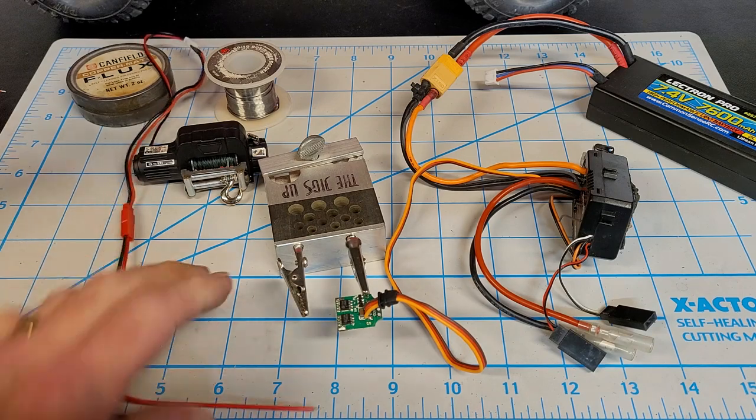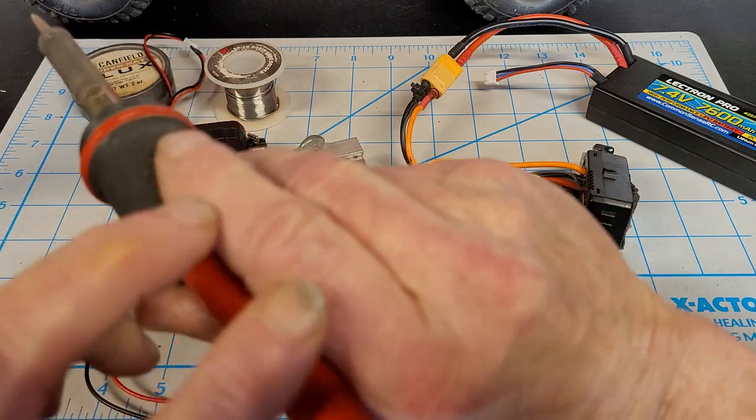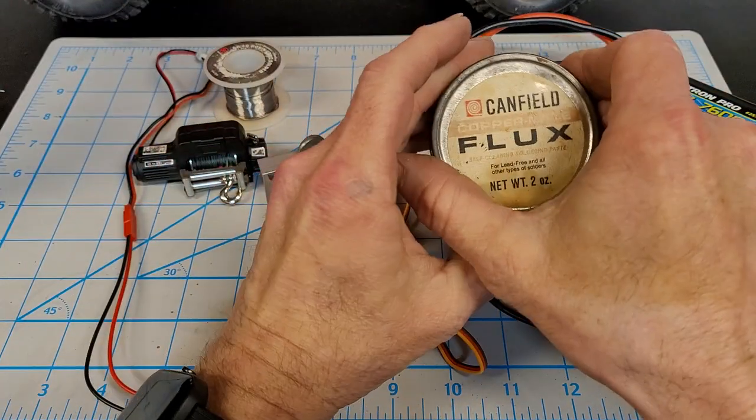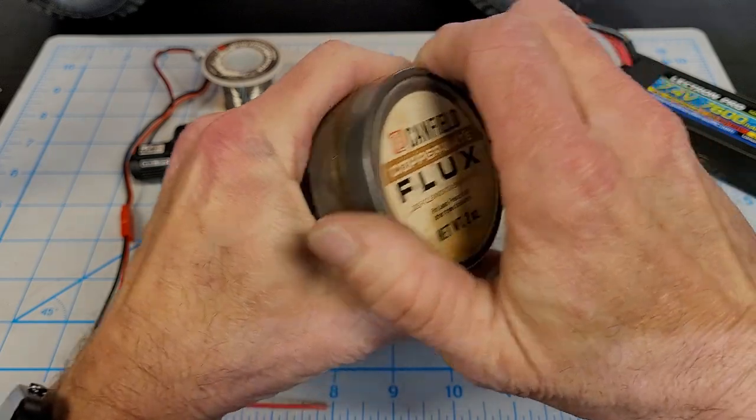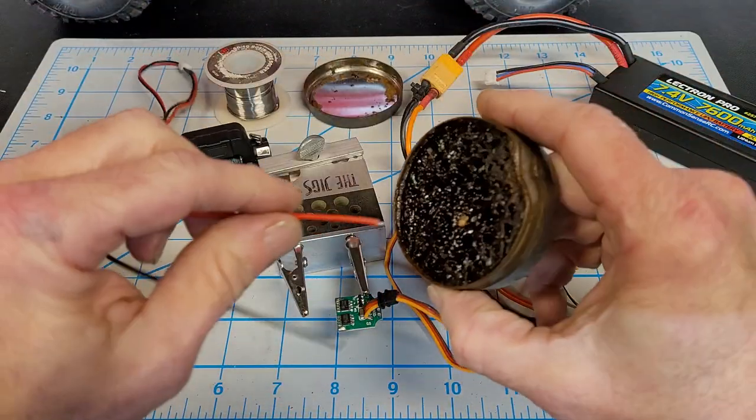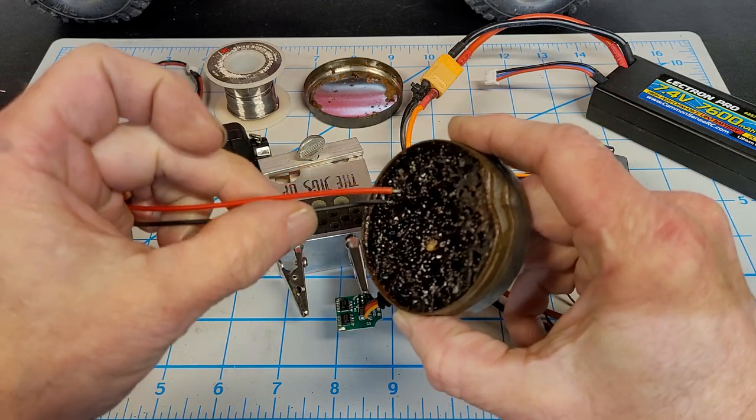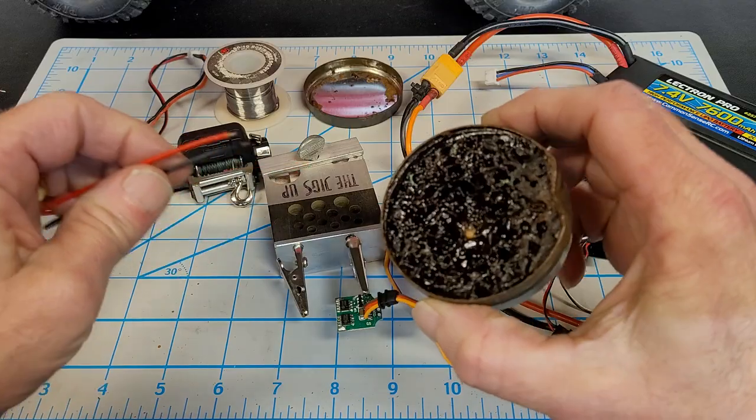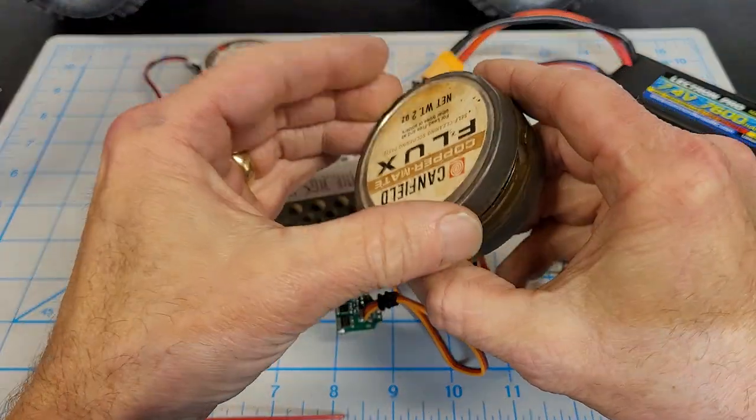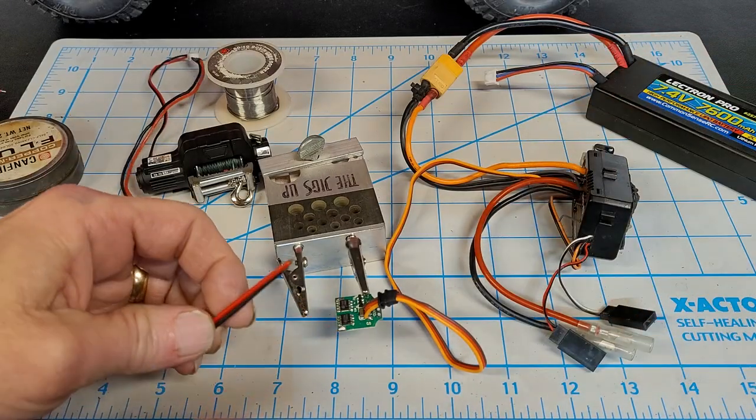So these wires are already pre-tinned, so I'm going to use this flux again I talked about in my previous video. And all you do is just take it and dip it in there, blow on it and you're good to go. It doesn't need to be globbed up on there, just a little bit, that's all you need.